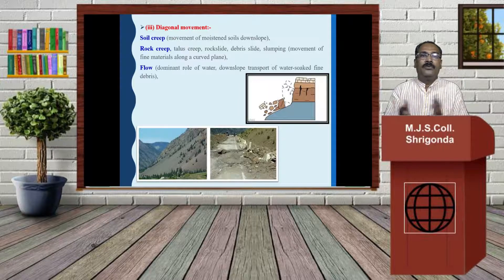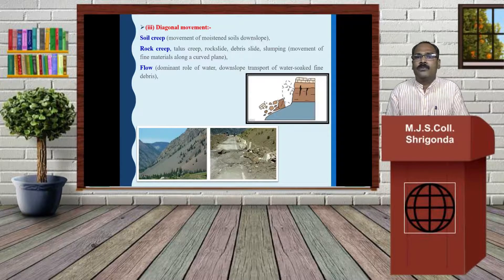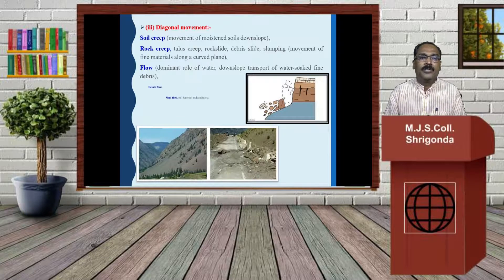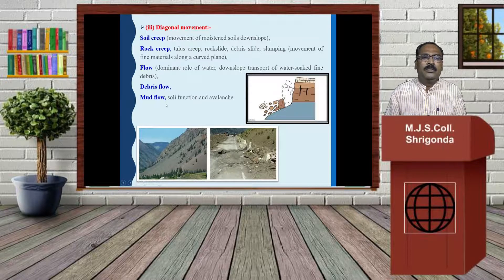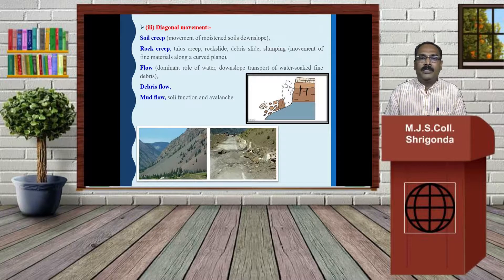Then the flow — dominant role of water. Downslope transport of water and soft fine debris, etc. And debris flow. And lastly, mud flow, soil flows, and avalanche.